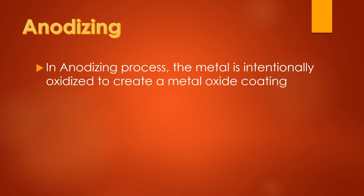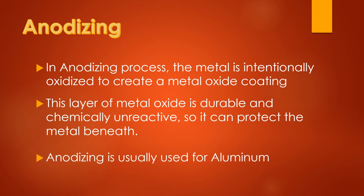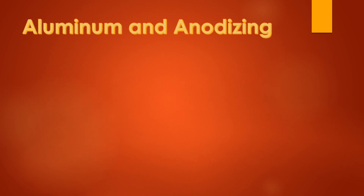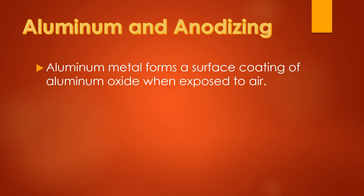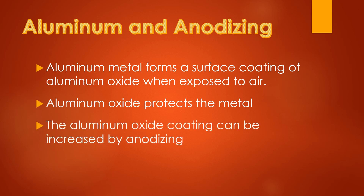In the anodizing process, the metal is intentionally oxidized to create a metal oxide coating. This layer of metal oxide is durable and chemically unreactive, so it can protect the metal beneath. Anodizing is usually used for aluminum. Aluminum metal forms a surface coating of aluminum oxide when exposed to the air, and aluminum oxide protects the metal. The aluminum oxide coating can be increased by anodizing.